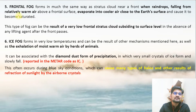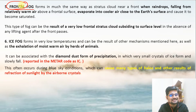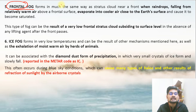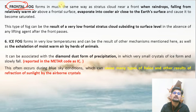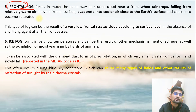Frontal fog: the name itself is frontal — we have already understood frontogenesis. Similar to cloud formation associated with warm fronts and cold fronts, fog formation happens near the Earth's surface at frontal boundaries. That is called frontal fog.